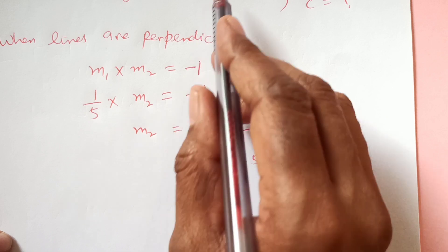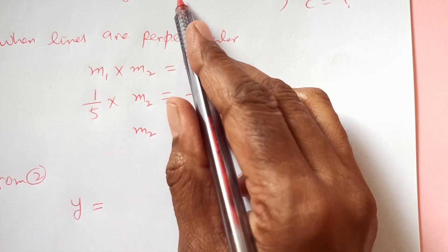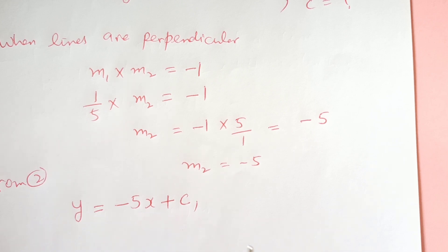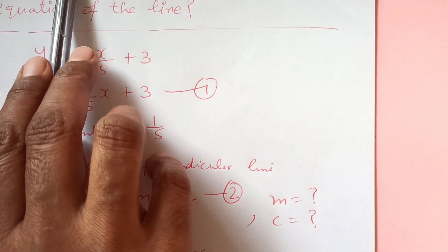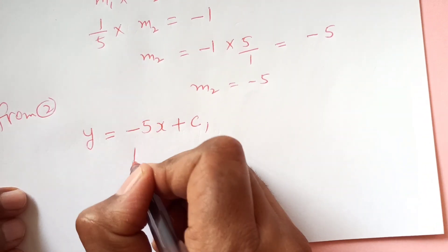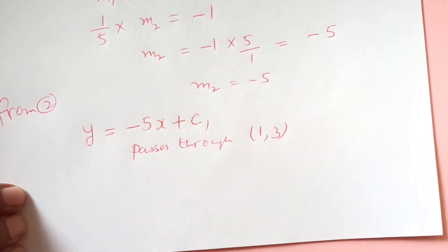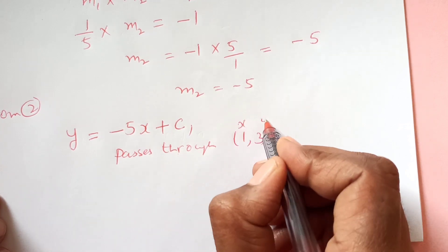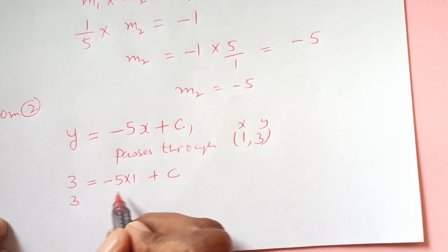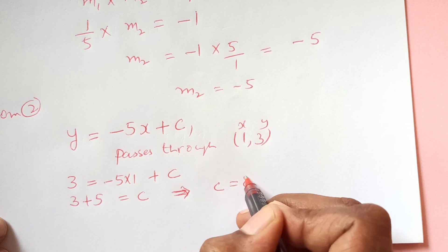We can substitute this value into equation 2. So y = -5x + c. Now we need c. We are given that the perpendicular line passes through (1, 3). So substituting x = 1 and y = 3: 3 = -5(1) + c, giving us 3 + 5 = c, so c = 8.